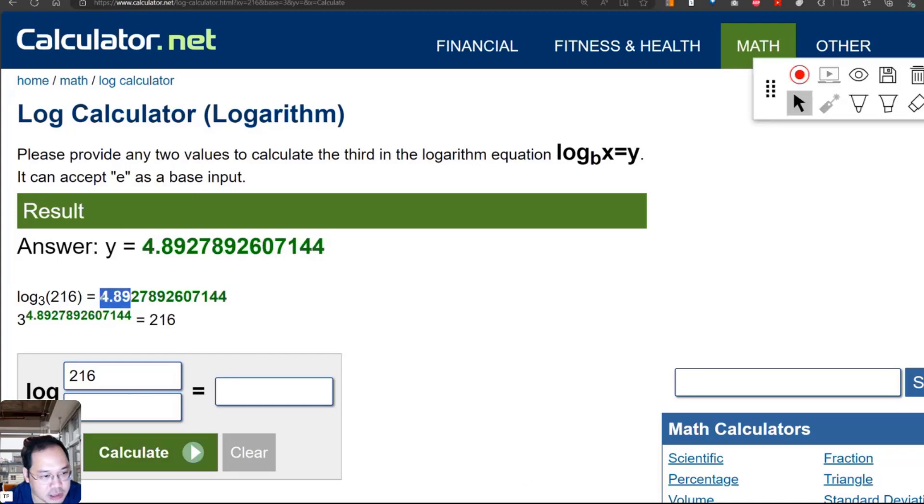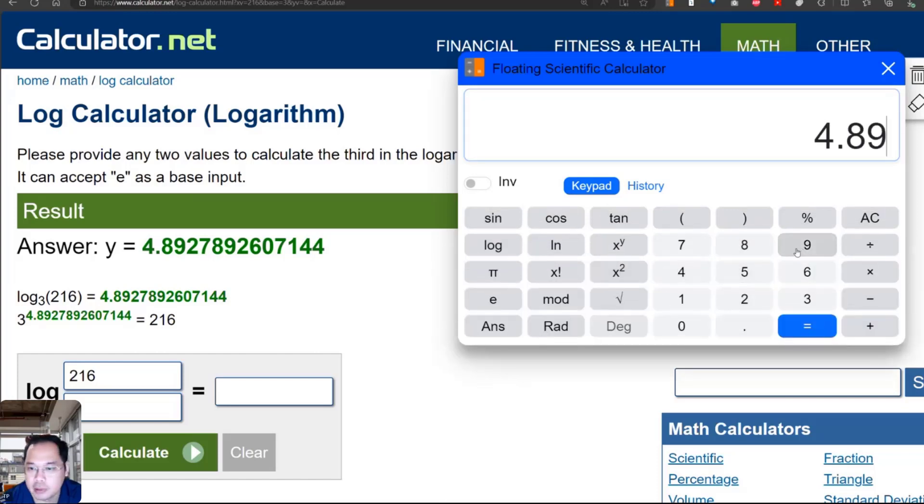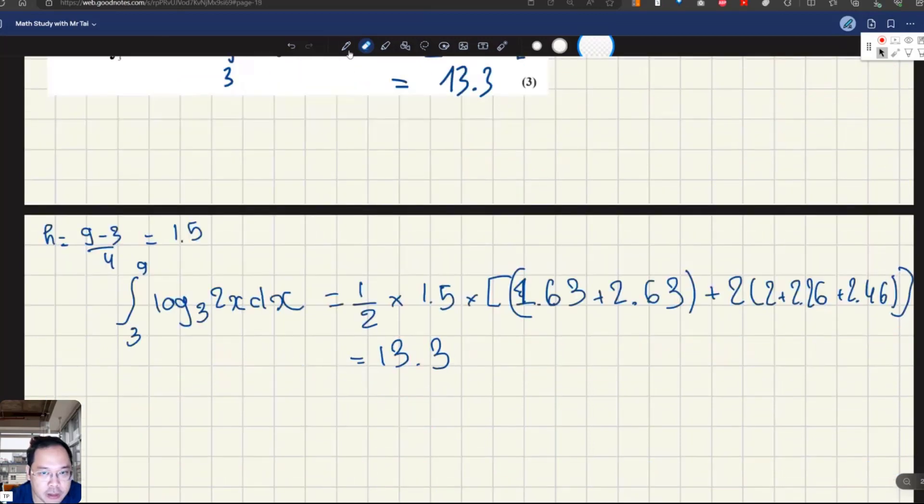If I replace it with 216, then it's 4.89. So how many times is 4.89 of 1.63? Divide them and you'll see it equals 3 times. 4.89 divided by 1.63, you see, it's approximately 3 times.